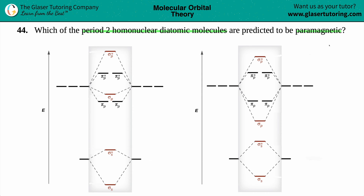The first thing is to look on the periodic table and identify which elements are in period 2. From period 2, from left to right, we have lithium, beryllium, boron, carbon, nitrogen, oxygen, fluorine, and neon.